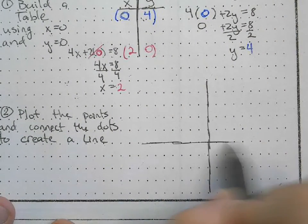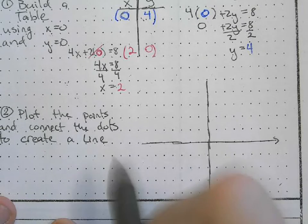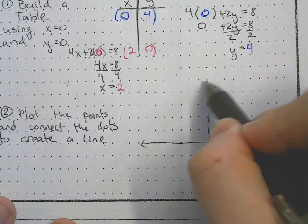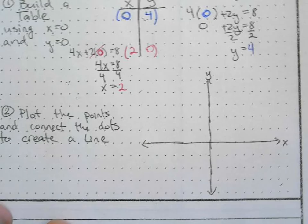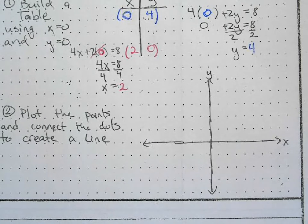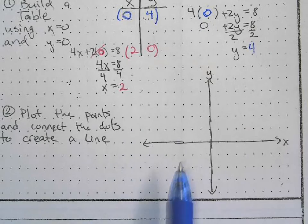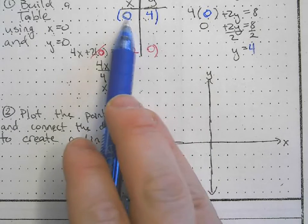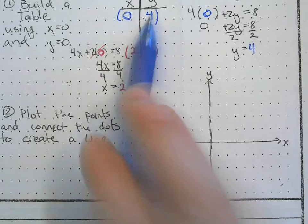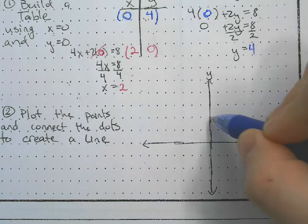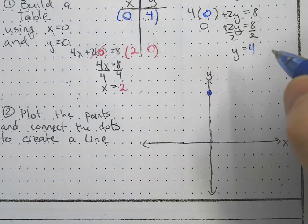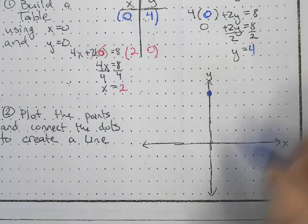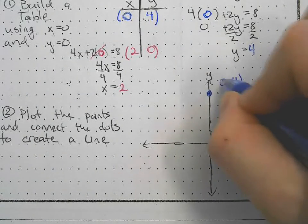I'll draw my xy plane, labeling my axes. My first point was 0, 4. There's no left or right movement, no movement on the x, staying at 0. Then we go up 4: 1, 2, 3, 4. So 0 comma 4.